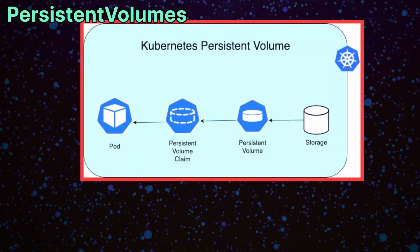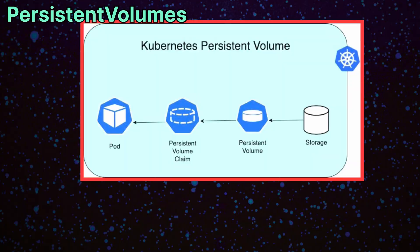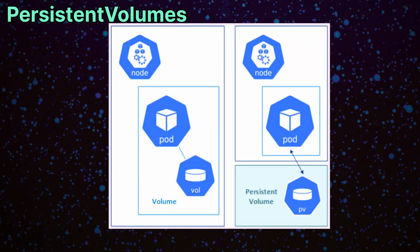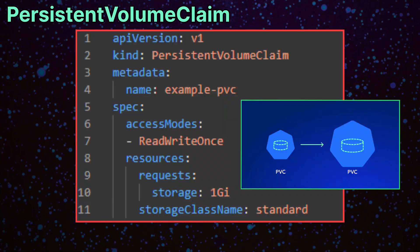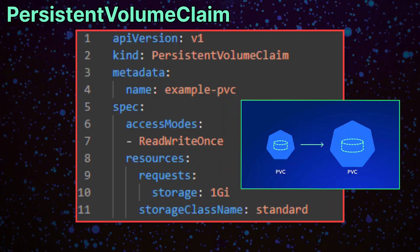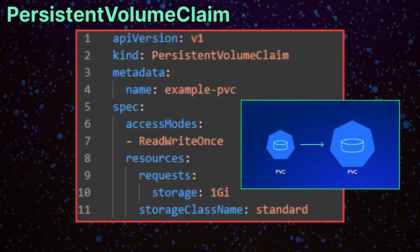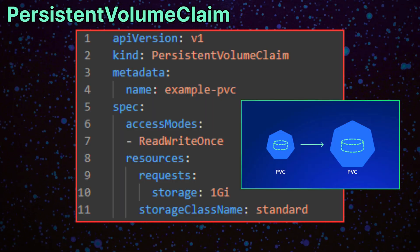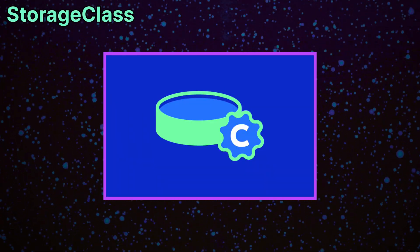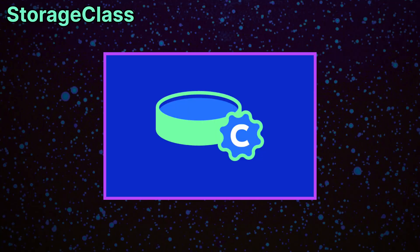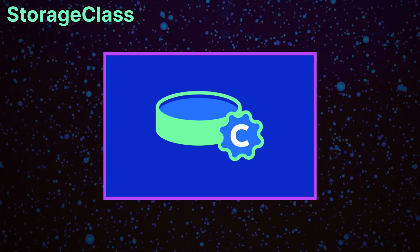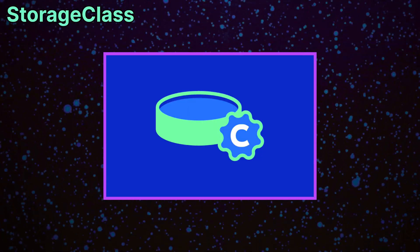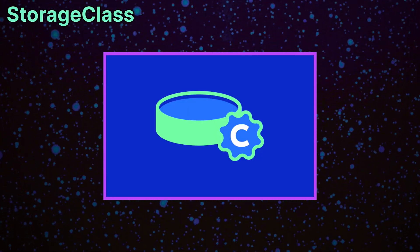For storage, Kubernetes uses persistent volumes to represent actual disk space, either in the cloud or on physical volumes. Use persistent volume claims to let pods request disk space on these volumes. A storage class defines different types of storage, like SSDs or slower disks, and allows Kubernetes to automatically provision storage as needed.